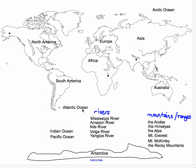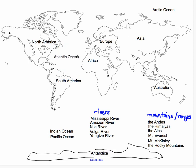Next, we deal with the Atlantic Ocean. The Atlantic Ocean goes between which two continents? It goes between North America and Europe, and also between South America and Africa. So this is all the Atlantic Ocean right here.